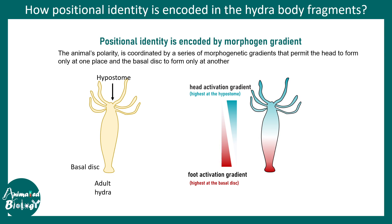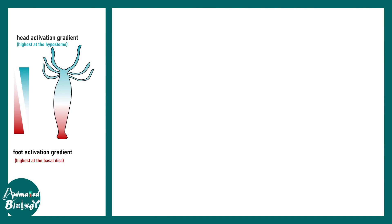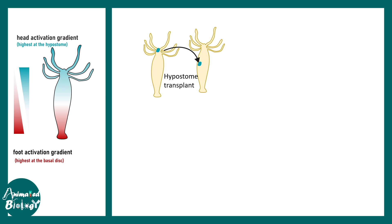Classical developmental biologists use transplantation experiments. In one such experiment, the hypostome from a donor Hydra was transplanted into the mid-segment of a recipient Hydra. An entire secondary body axis formed — a new head was regenerated. This shows that the transplanted tissue has the capability to induce head formation and contains some head-inducing molecule.